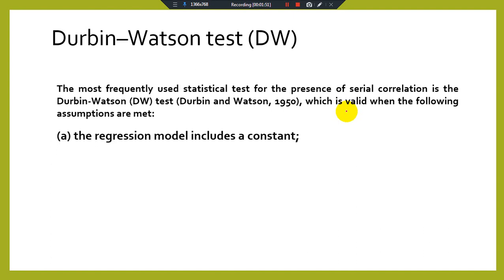The DW test was developed by Durbin and Watson in the 1950s and is valid when the following assumptions are met. First, the regression model must include a constant term. When a multiple regression model does not include a constant term, we cannot apply the Durbin-Watson test for the detection of autocorrelation.